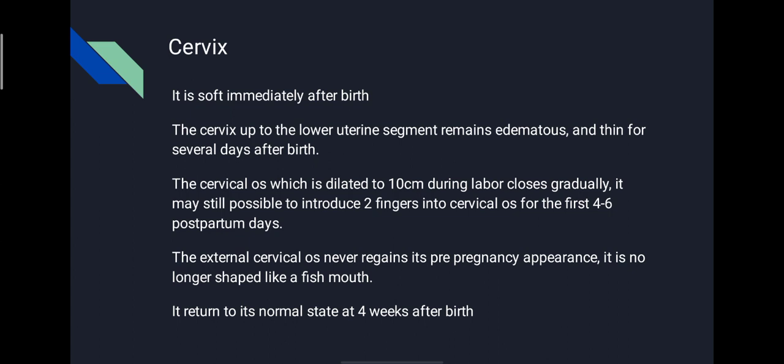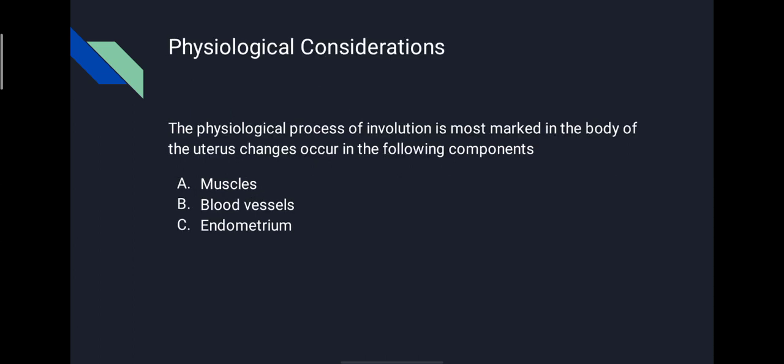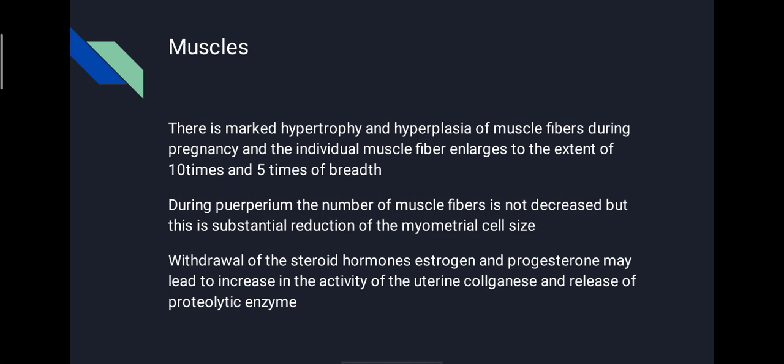The physiological process of involution is most marked in the body of the uterus. Changes occur in the following components: muscle, blood vessels, and endometrium. Regarding changes in uterine muscle, there is marked hypertrophy and hyperplasia of muscle fibres during pregnancy, and individual muscle fibres enlarge to 10 times in length and 5 times in breadth. During puerperium, the number of muscle fibres is not decreased, but there is substantial reduction of the myometrial cell size. Withdrawal of steroid hormones, estrogen and progesterone, may lead to increased activity of uterine collagenase and release of proteolytic enzymes, which helps in involution.